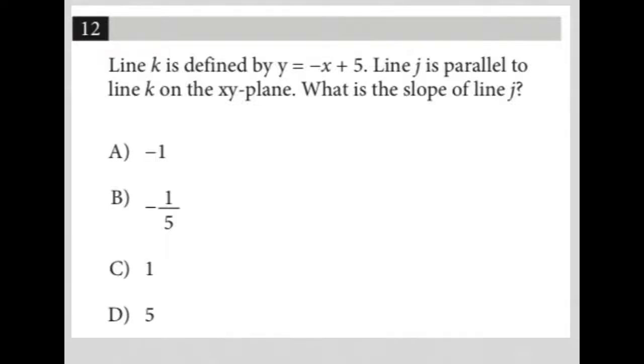So, this question says line k is defined by y equals negative x plus 5. Now, I'm going to stop there just to make a note that anytime you see a line defined by an equation, you should be thinking y equals mx plus b, which means if the equation of the line provided is y equals negative x plus 5, it is telling us that m is negative 1 and b, the y-intercept, is equal to 5.